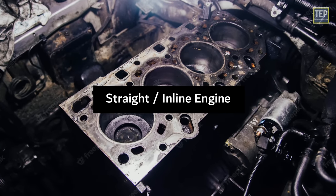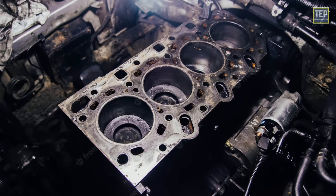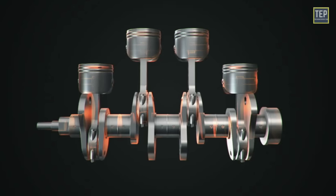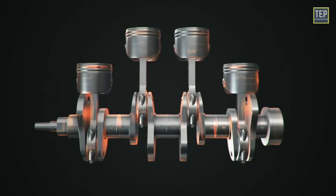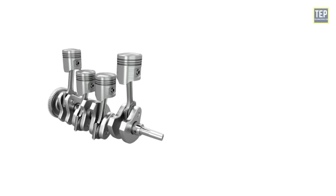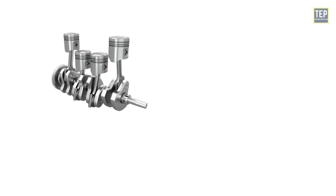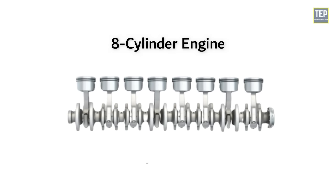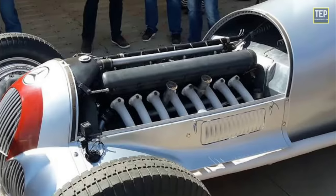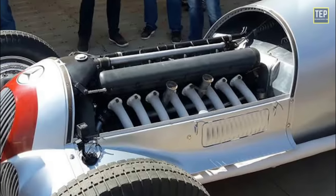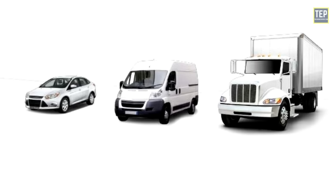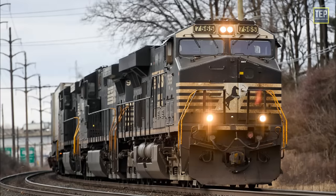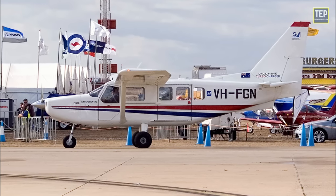The straight or inline engine is an internal combustion engine with all cylinders aligned in one row with no offset. An inline engine has a simple design and is often denoted as an 'I' engine, usually found in four, six, and eight cylinder configurations — though eight cylinders in a row would be too long to fit in most engine bays. They have been used in many light, medium, and heavy commercial vehicles, earth-moving equipment, locomotives, and aeronautics.